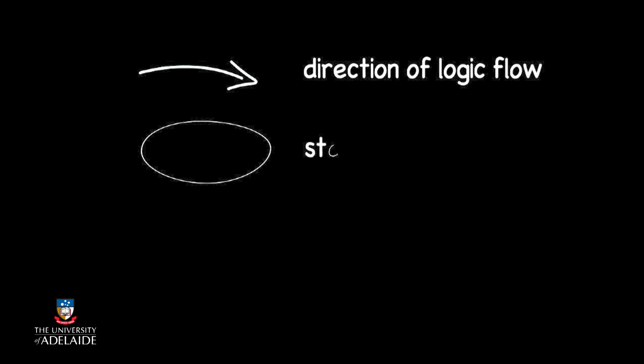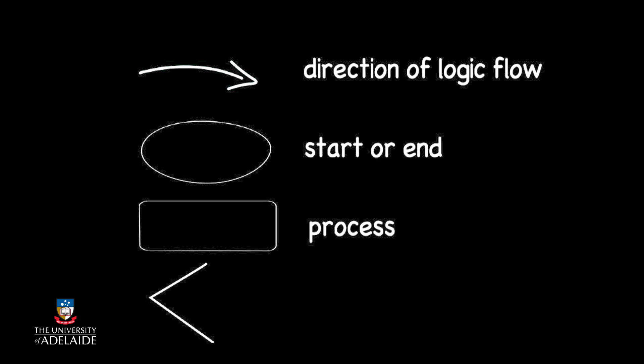The first symbol we will use is the arrow, which tells us the direction of logical flow through our flowchart. The second symbol is the oval, which is used to represent the start or end state of our algorithm. Next is the rectangle, which represents a process, and finally is the diamond, which represents where we make a choice.